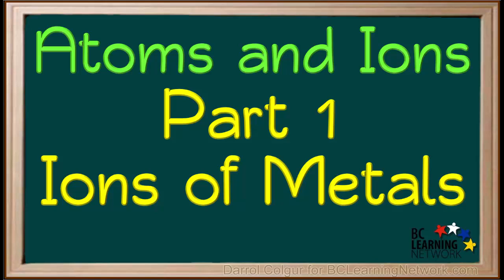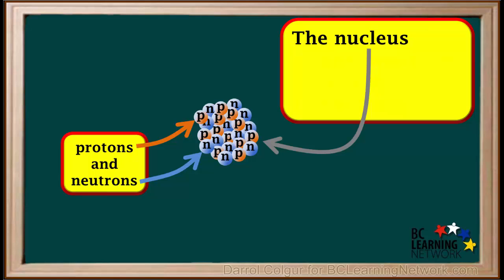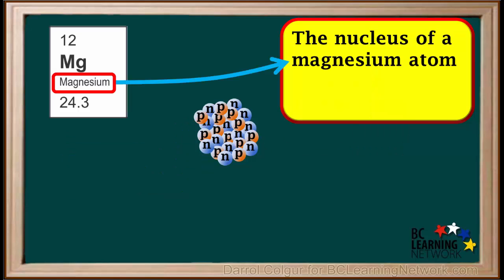Here we'll have a look at what atoms and ions are, and how atoms change into ions. We'll start off by looking at how metal atoms form ions. In the center of all atoms there is a nucleus. A nucleus is made up of protons and neutrons. The nucleus shown here is the nucleus of a magnesium atom.